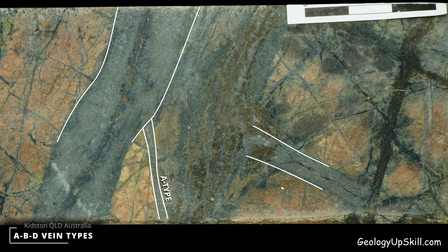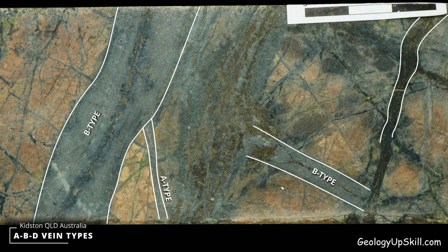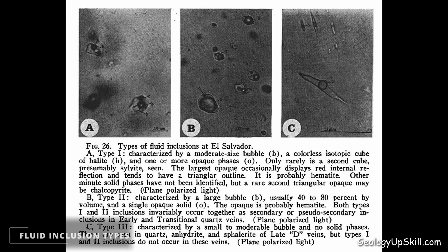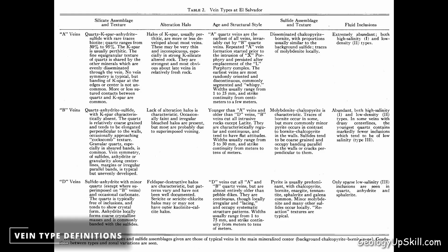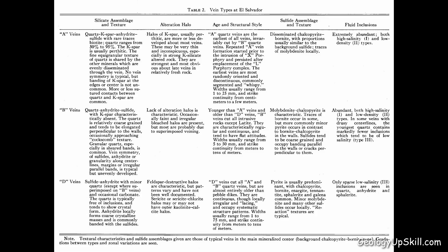Their system was primarily designed to record the relative timing of vein types based on cross-cutting relationships, and hence to draw conclusions about the evolution of the hydrothermal fluid system. They also included mineralogy and textural characteristics so that isolated veins could be assigned to one of the categories. The original definitions are described in a table from the Gustafson and Hunt paper.